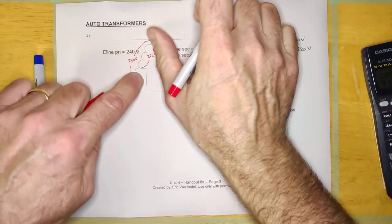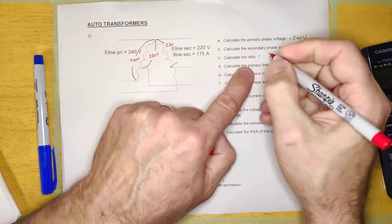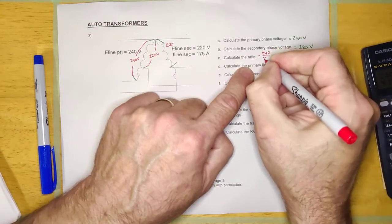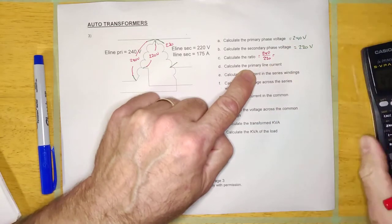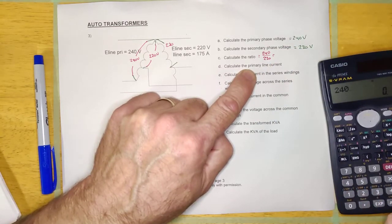Now we can look at that and figure out everything. Calculate the ratio. The ratio is going to be the high voltage over the low voltage every time - that'll work 100% of the time. 240 divided by 220 equals 1.091 to 1.